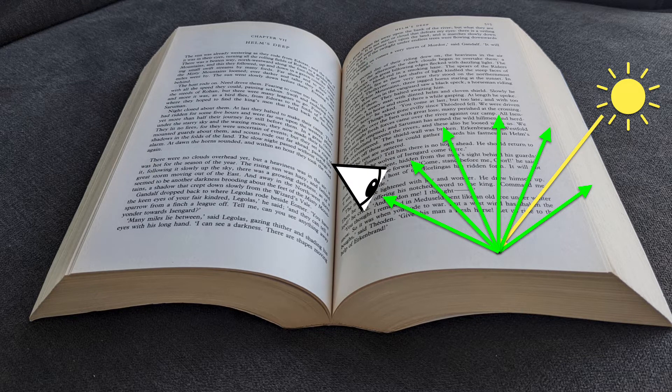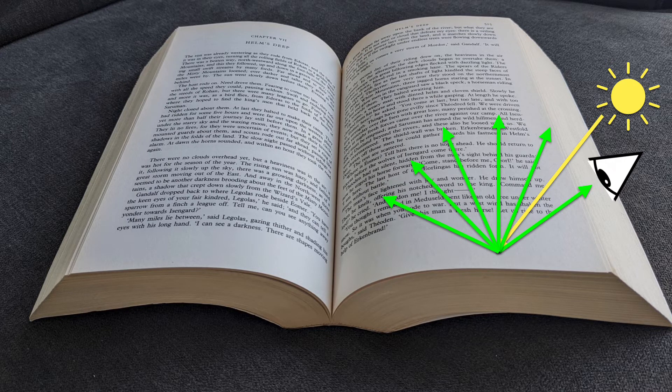That's why paper looks about the same no matter what angle you view it. Surfaces that act this way are known as diffuse. They diffuse incoming light into a wide range of outgoing directions.